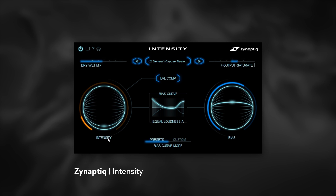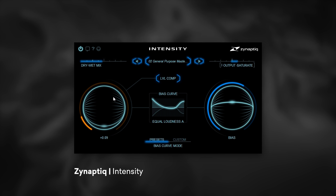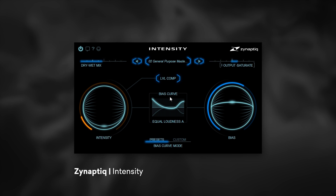The Intensity is the main parameter of this plugin. It's going to boost what the algorithm defines as detail — making things more dense, more thick, more detail-oriented. As you go further into the higher values, if you've got a lot of already high-frequency content inside your mix you might start to notice some issues, so be careful with that.